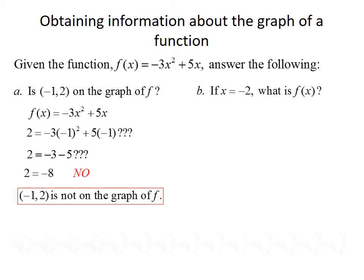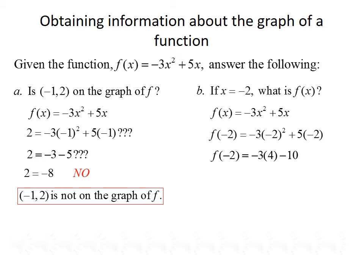Next, if x equals negative 2, find the value of f(x). We start with f(x) equals negative 3x squared plus 5x and plug in negative 2 for x. So f(−2) equals negative 3 times (−2) squared plus 5 times (−2), which gives us negative 3 times 4 minus 10. Simplifying further, f(−2) equals negative 12 minus 10, so f(−2) equals negative 22.